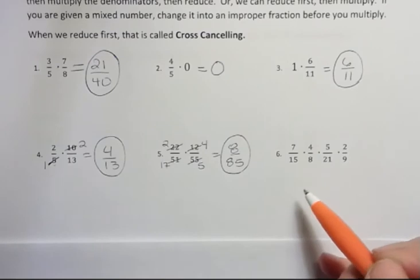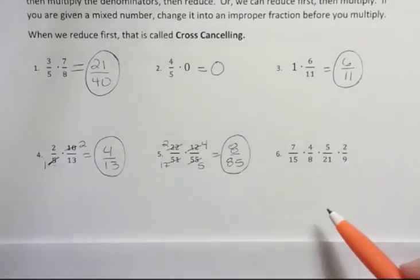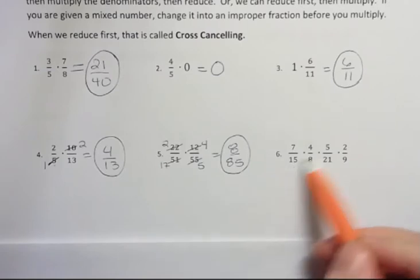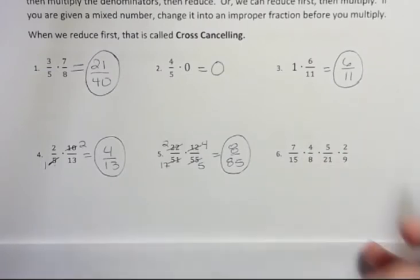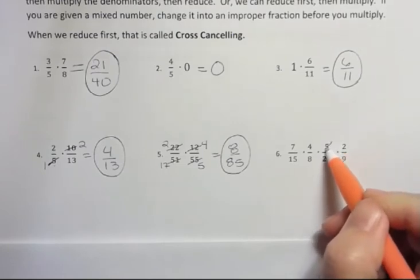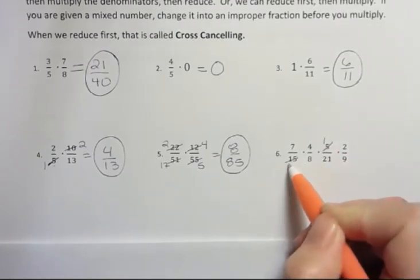Okay, what about this one? Well, I'm going to cross cancel and whatever you see, start there. I just happened to see 5 and 15 first. Maybe you'd see 7 and 21 first. But I'm going with 5 and 15. 5 goes into itself once. It goes into 15 three times.